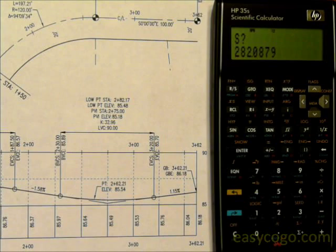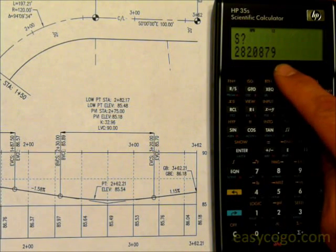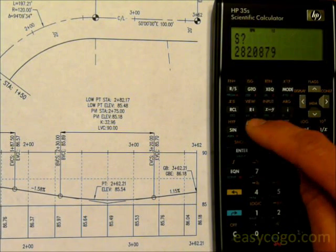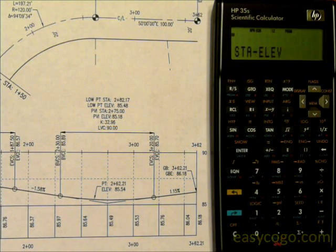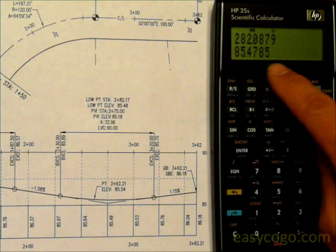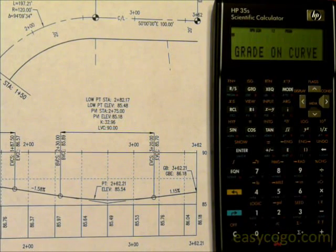We can enter any station we want on the vertical curve. The first default is the derived low point station, and since we want to know the elevation of that, we'll just accept it. Then it shows the station and the elevation at the low point. Press RS to continue.